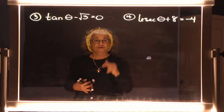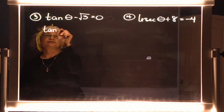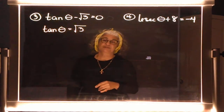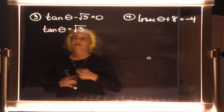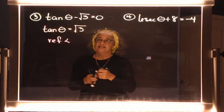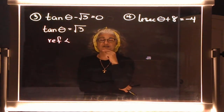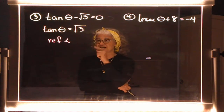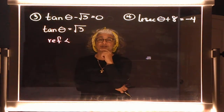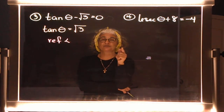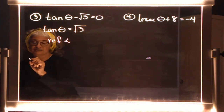Problem three: first, get the trig function by itself — move over that square root of three. Now find the reference angle. The answer, square root of three, is not on the 45-45-90 triangle, because those numbers are one, one, and root two. The 30-60-90 triangle has one, two, and square root of three — that's the one. I'll draw a 30-60-90 triangle and label it correctly: one, two, and square root of three.